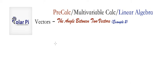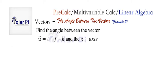Hey, welcome. In the previous video I showed you how to find the angle between two vectors in two dimensions. Here we'll do it in three dimensions. The question says: find the angle between the vector u equaling i minus j plus k and the x-axis.